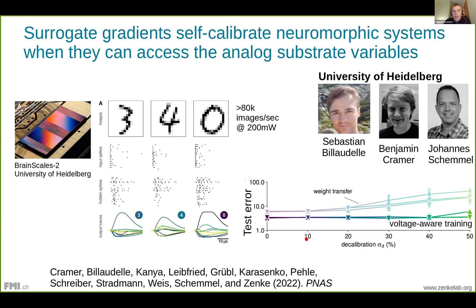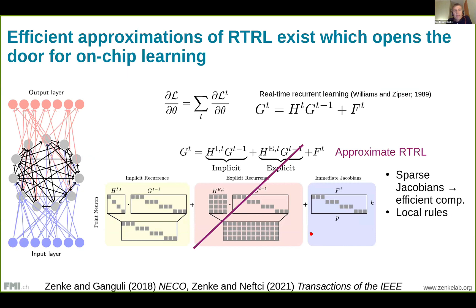Another crucial point is coming up with efficient approximations for training algorithms that run on analog substrates performing computation via device physics. Backpropagation through time is tricky to do on such substrates, but fortunately there are effective approximations of RTRL — real-time recurrent learning. One goes via sparse Jacobians, ignoring explicit recurrence while still leveraging recurrent connections. This makes it more efficient to compute than standard RTRL and also gives rise to local learning rules.